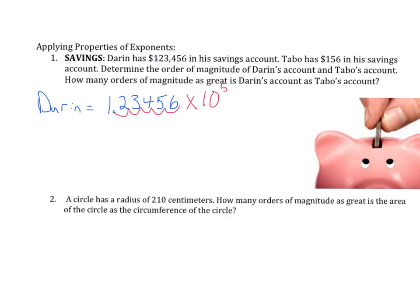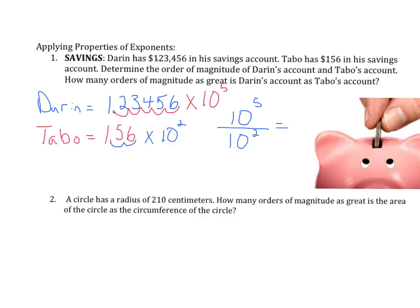For Tabo, we rewrite as 1.56 and count the decimal places: one, two — times 10 to the second. So the order of magnitude for Tabo is 10 to the second. Now we say how many orders of magnitude greater is Darren's account than Tabo's? We divide Darren's order of magnitude by Tabo's: five minus two gives us 10 to the third. So Darren's account is 10 to the third times as great as Tabo's. Go ahead and give number two a shot on your own and we'll look over that one in class on Monday.